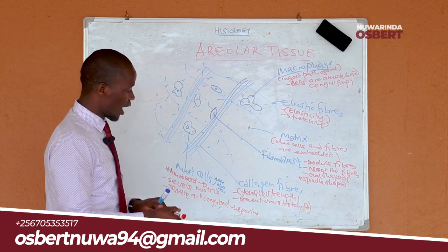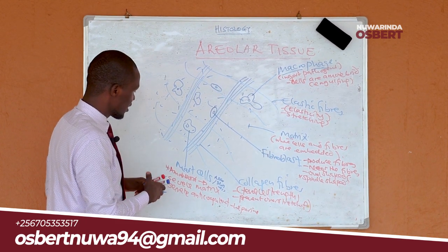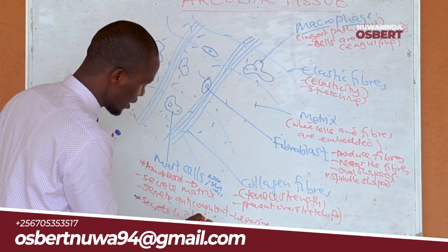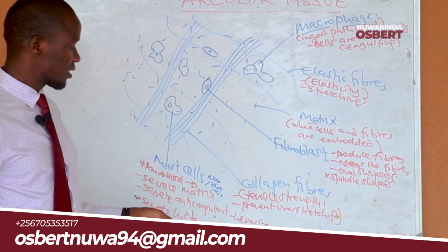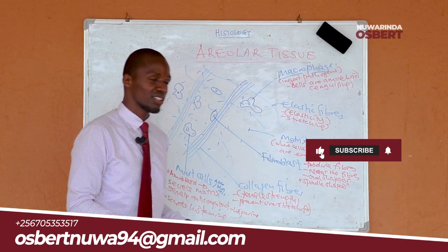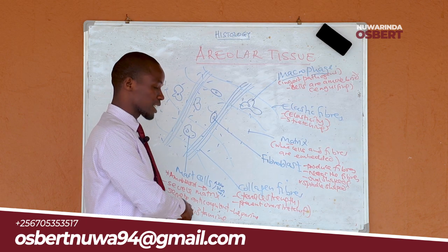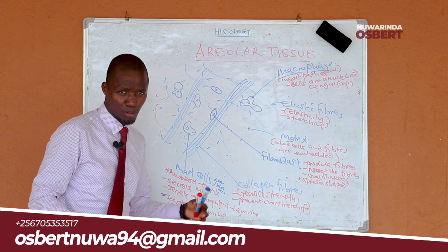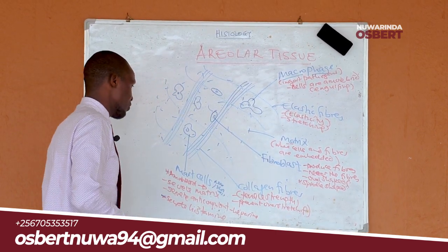Mast cells also secrete a substance called histamine. We will look at histamine in more detail in the episode about transport or immunity. But histamine plays a very important role when it comes to allergic reactions within the body.